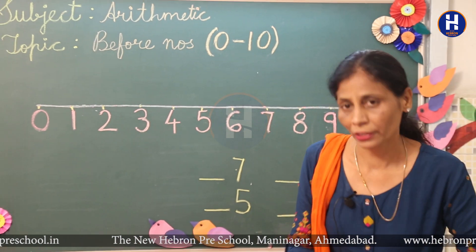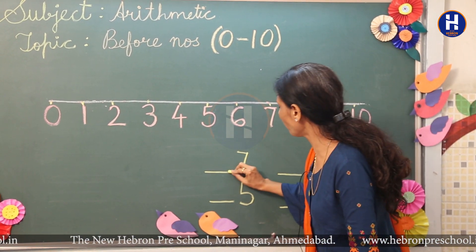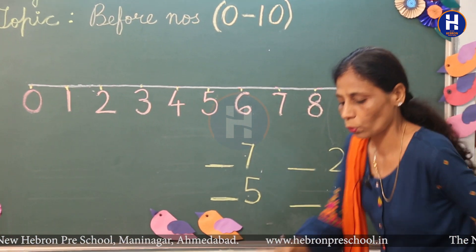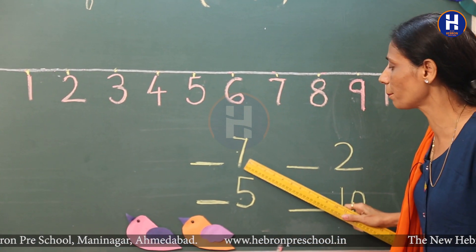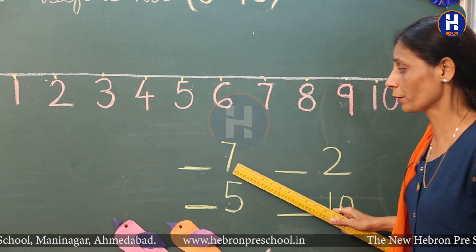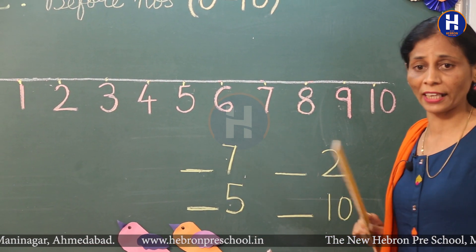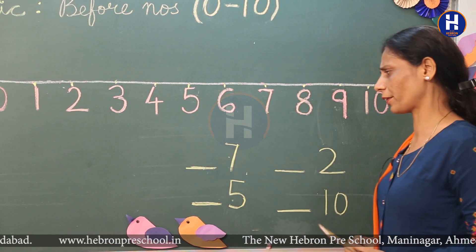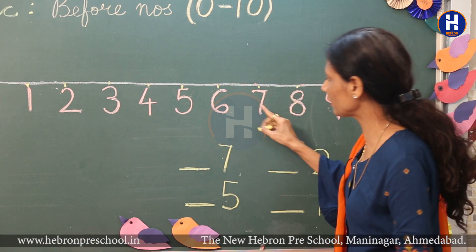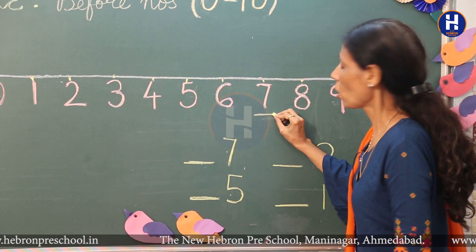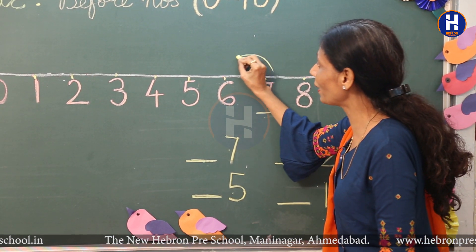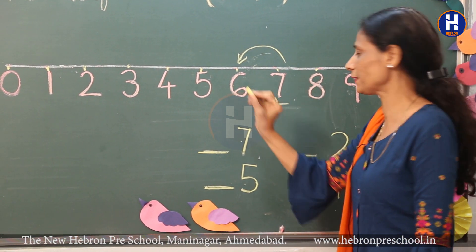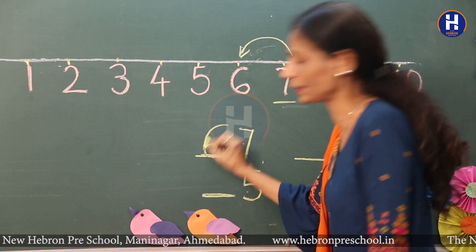Good children. Now look here — there are numbers on the board. We will see which number is coming before these numbers. Which number is this? Seven. Good — now which number comes before seven? Seven se pehle kya aa raha hai? Yes, number six! Number six comes before seven, so we write six here.